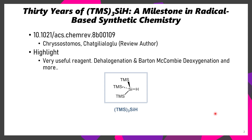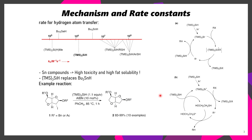The first paper involves the use of tris(trimethylsilyl)silane, a milestone in radical-based synthetic chemistry. This reagent effectively works the same way that tributyltin hydride does, except with the advantage that instead of using something with tin in it, it just uses something with a silane.